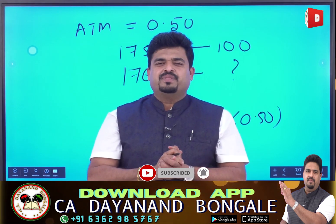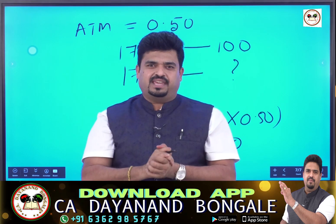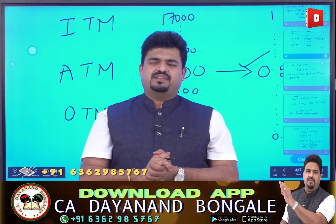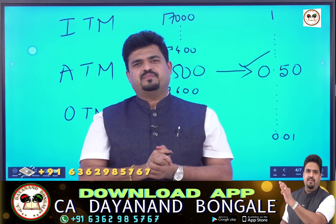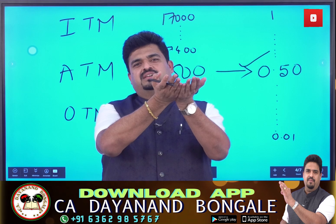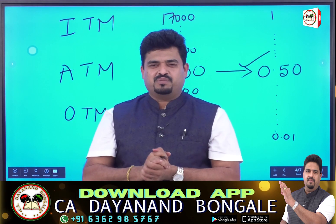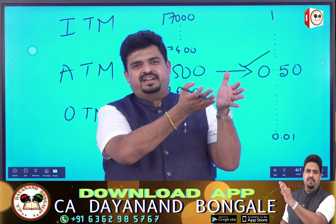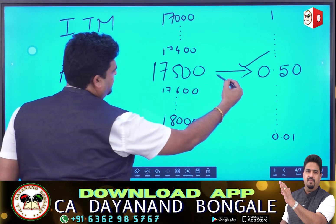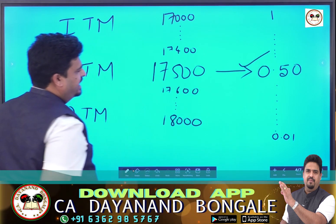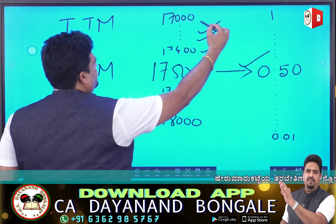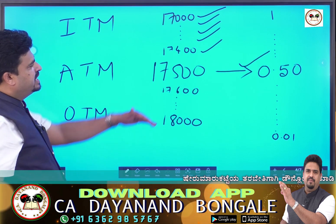Delta is always between 0 and 1. At the money strike price, Delta equals 0.5. In the money options have Delta approaching 1, and out of the money options have Delta approaching 0. For example, at the 17,500 level, Delta values scale between 0 and 1 depending on whether the option is in, at, or out of the money.